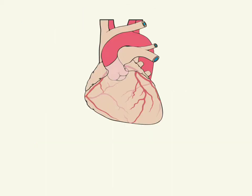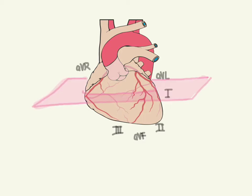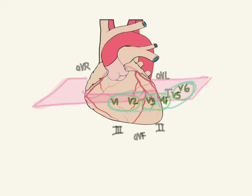Now let's review again which leads look where. Looking at the lateral side of the heart, we have leads 1 and AVL. Looking at the bottom are 2, 3, and F. AVR is up here. And the precordial leads look at a different plane. V1 and V2 are over here looking at the anterior — these might be septal, and these could be lateral. Or other people call these lateral and these anteroseptal.